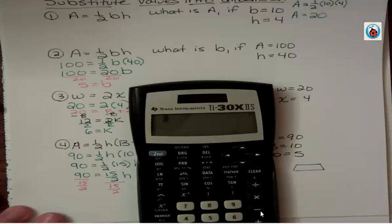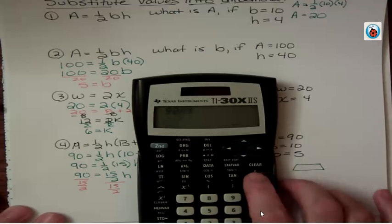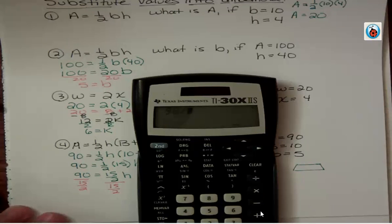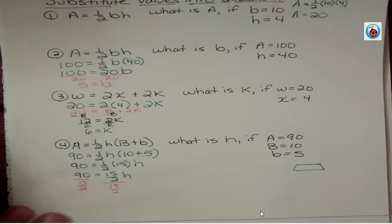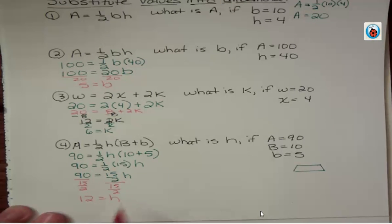90 divided by—remember this fraction button—we're dividing by a fraction. So 90 divided by 15/2, and that is 12. Perfectly legitimate way to do that, and it's a great use of your calculator.